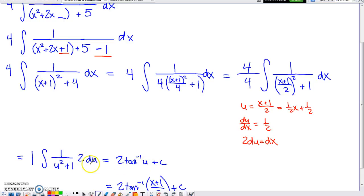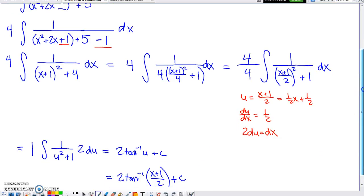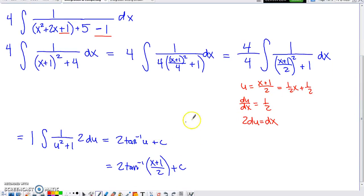And then the antiderivative of 1 over u squared plus 1 is going to be inverse tangent of u. We just have to make sure we account for the 2 that we've factored out. It is an antiderivative, so we need our plus c. And then the last thing to do would be to make sure you get your original variable into your answer. And the original variable is x. So x plus 1 over 2 is what we replaced the u with at the very end.